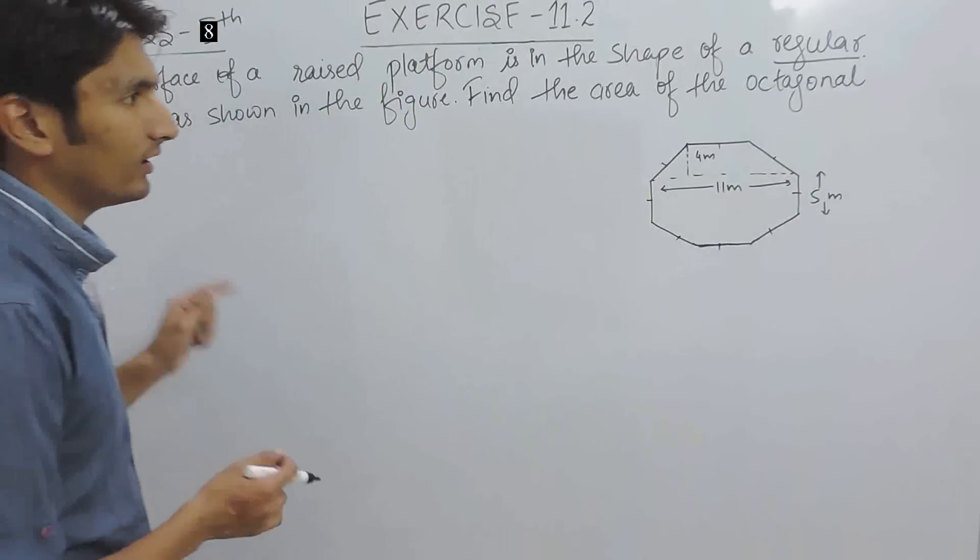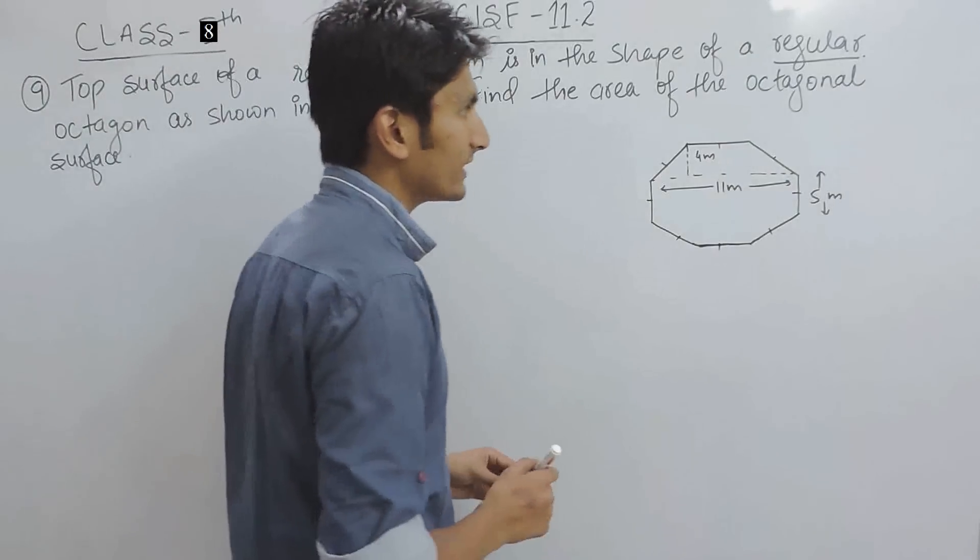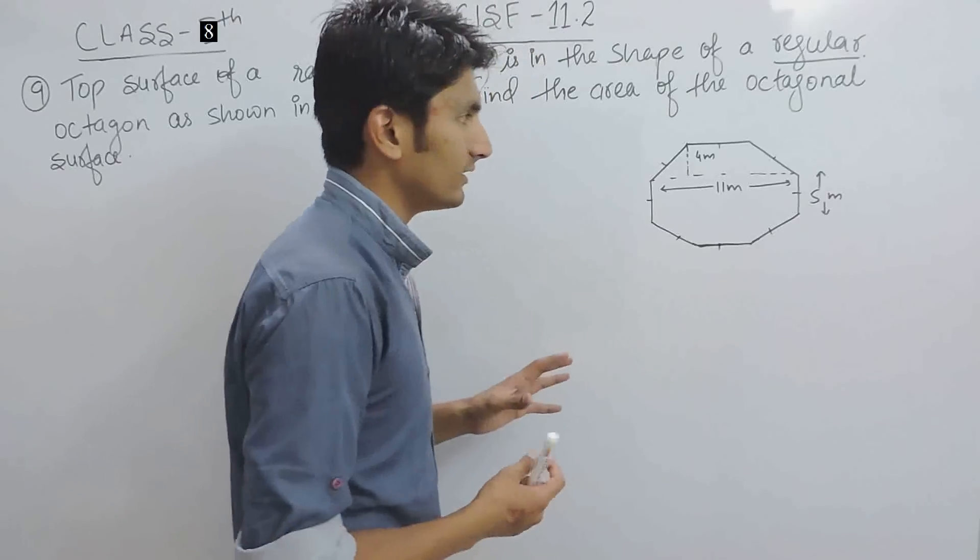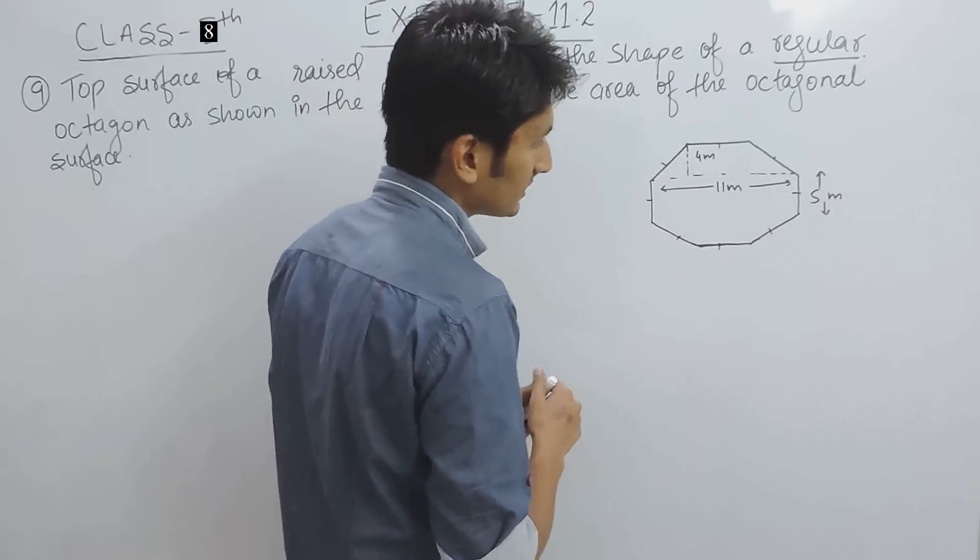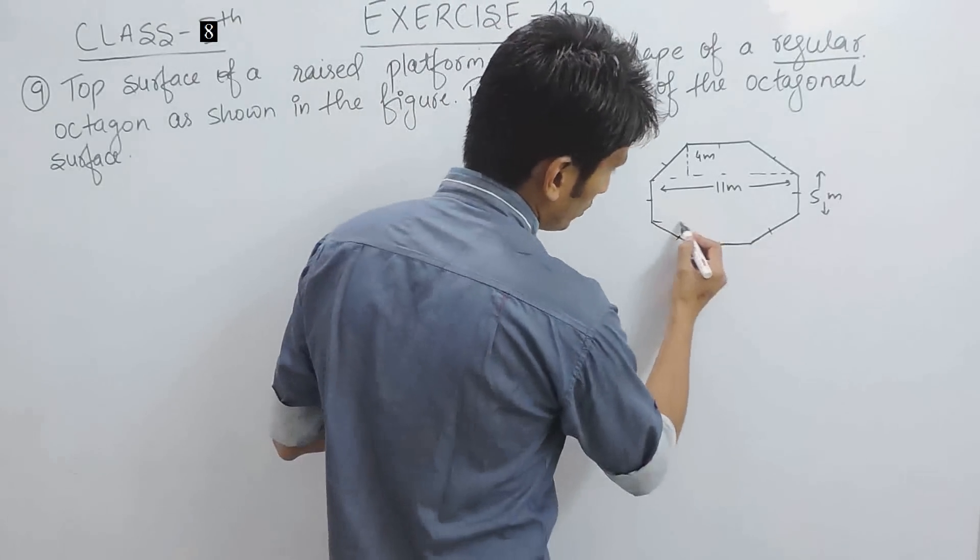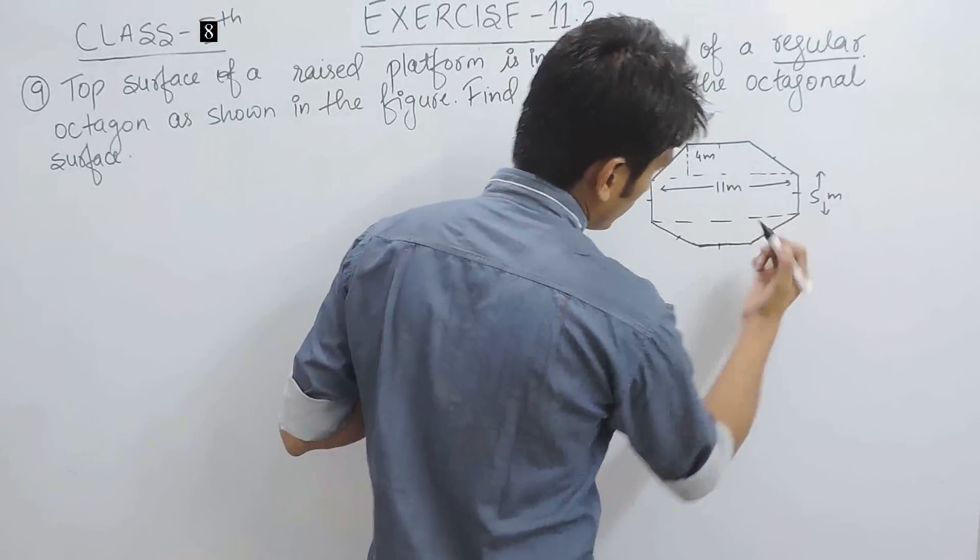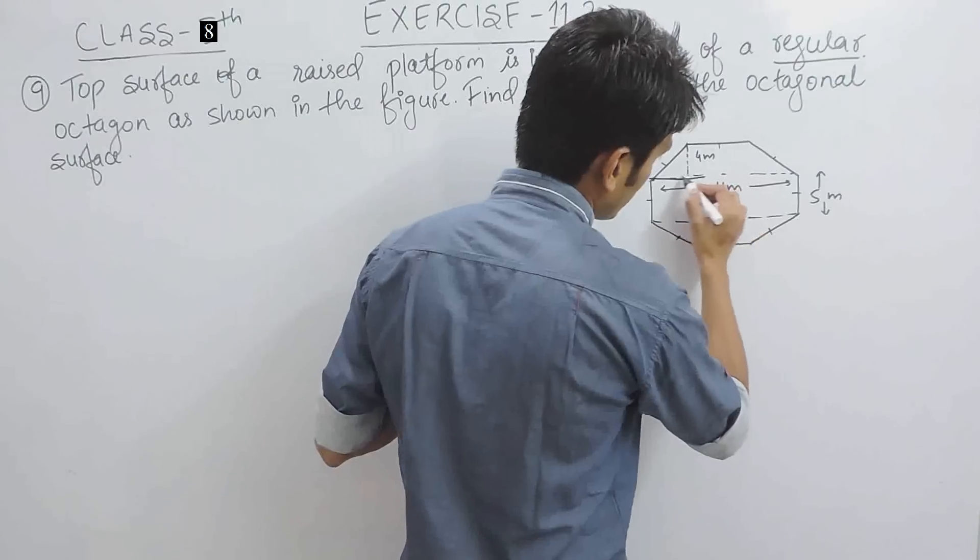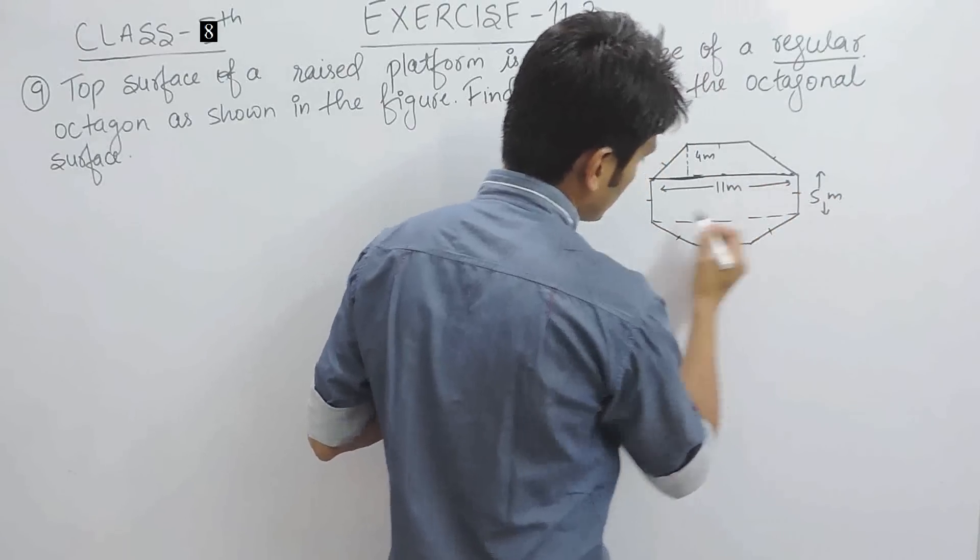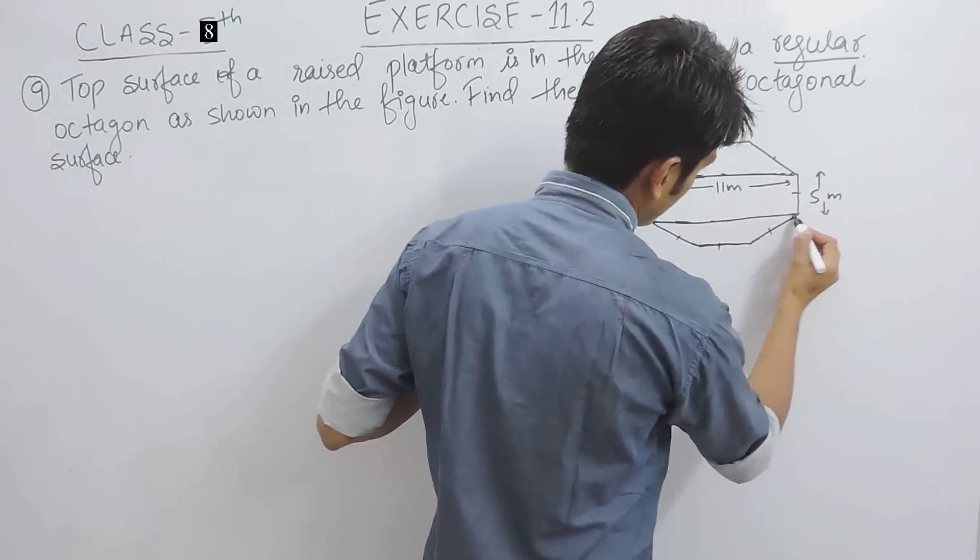You have to find its area. We don't know what is the area of the octagonal face, but when we divide this into two such parts, first is this and second is this. When we see at it, this is a trapezium where two lines are parallel.